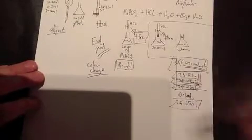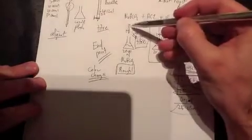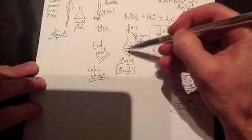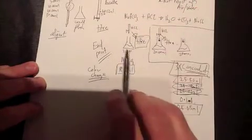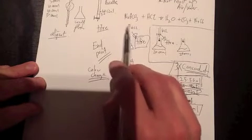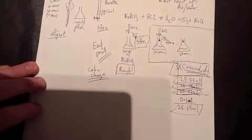To take the average, you only take the average of your concordant titers. You keep on doing titrations until you get results within 0.1 mL, and you ignore results outside that range. This allows you to be really precise and accurate with your answer. That's the basics of the titration - you do a rough one first to get an idea, then use subsequent ones to be more precise until you get that one drop that changes the color.